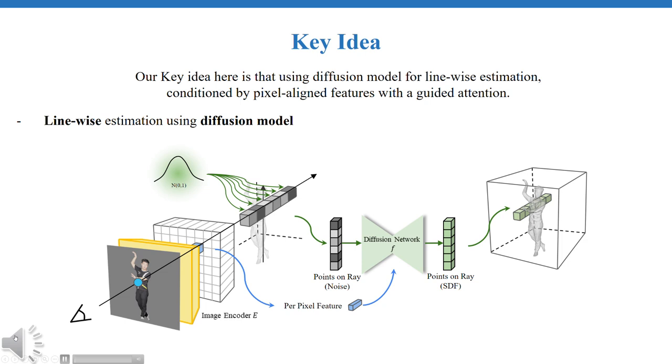Our key idea to address this issue is using a diffusion model for line-wise estimation conditioned by pixel-aligned features with guided attention. Let's delve into how the model works. Firstly, it employs a diffusion model to learn 3D geometry distribution for utilizing robust conversion toward train distributions.